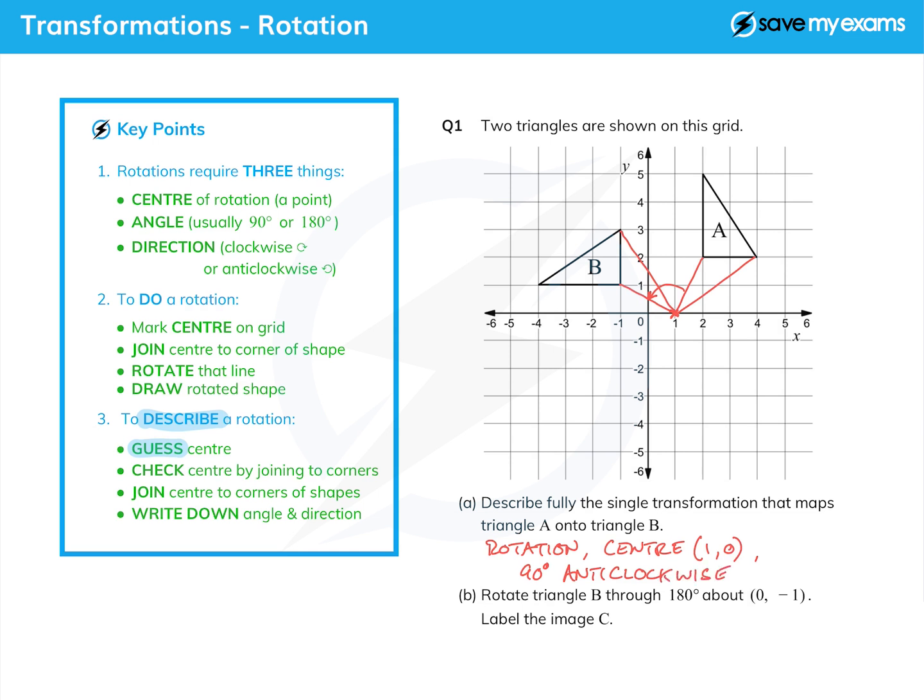And through 90 degrees, and that is anti-clockwise, and that will be your third mark. So if you're describing a rotation you need those three things. As I say, there are other methods of finding the center, but I think guessing and checking is as good a method as any. You'll get very good at it if you do it that way.